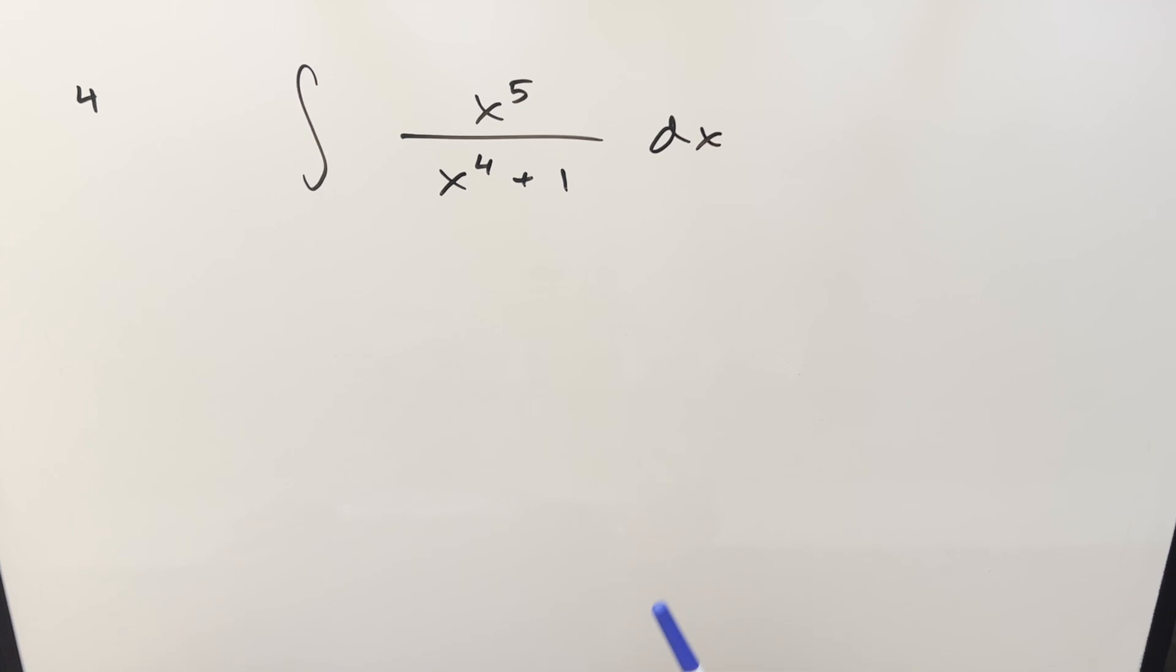It looks pretty straightforward. The first thing I was thinking about was, can we just take the whole denominator and do a u-sub? Well, the derivative of this is going to be x cubed, so I don't think it's going to work. I mean, it might work, but it doesn't seem too convenient to work with x to the 5th here.